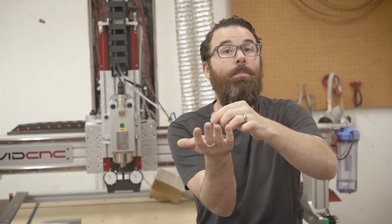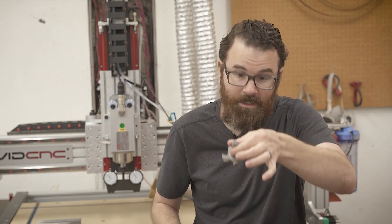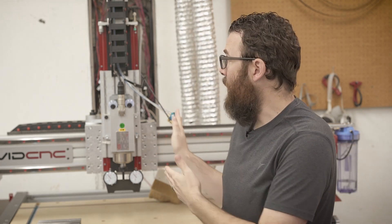That is the left and right adjustment but there also is the forward to backward adjustment. If the head is sagging forward you will still get that same issue. So what I want to do in this video is show you how to properly tram the head of an Avid Pro CNC router.